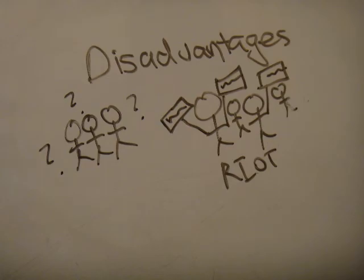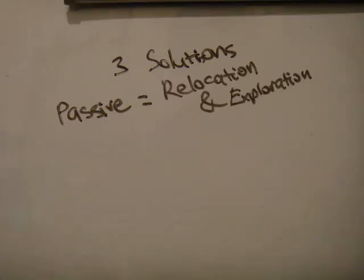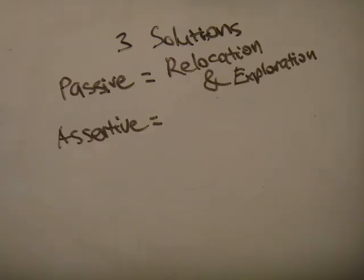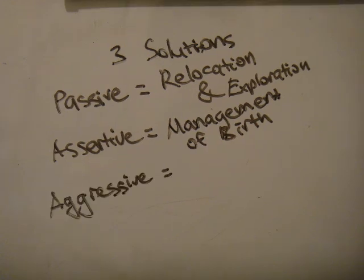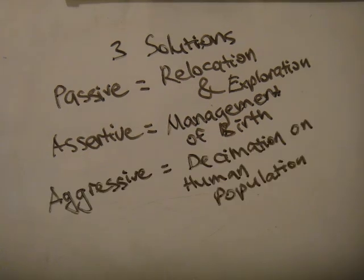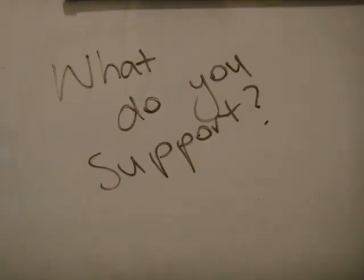And so, that is it — three solutions to overpopulation. We can either do it the passive way and relocate and explore, the assertive way and manage our birth rates, or aggressively and kill some people. But the bigger question is, what do you support?